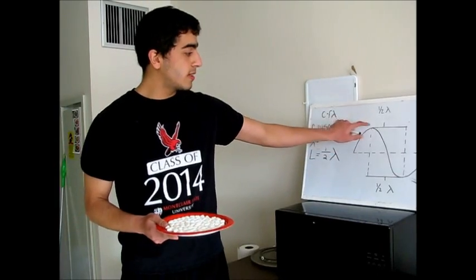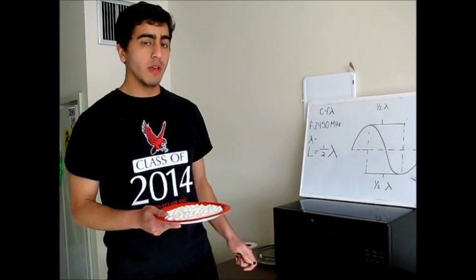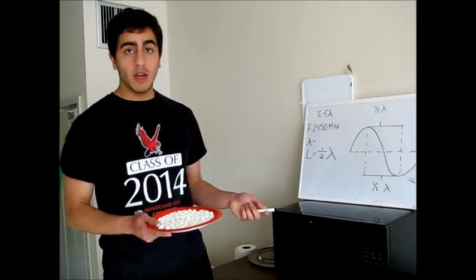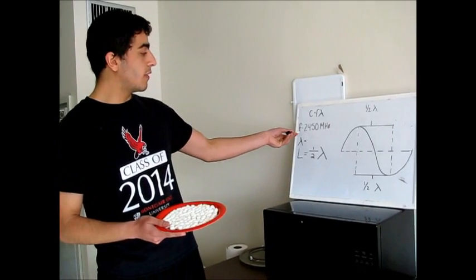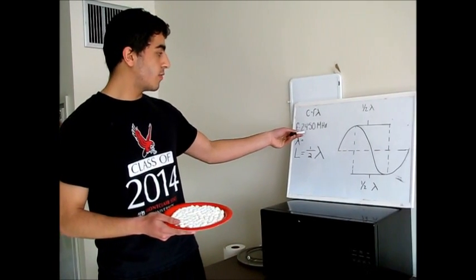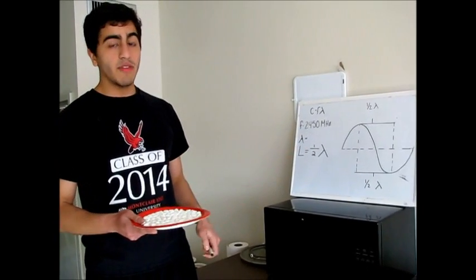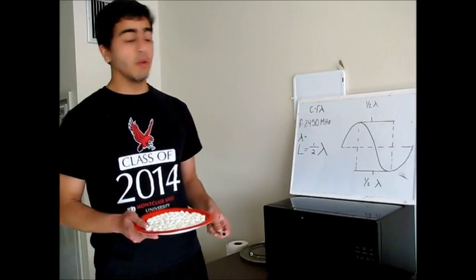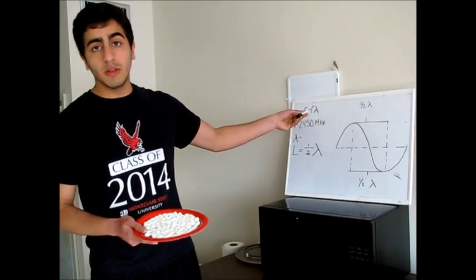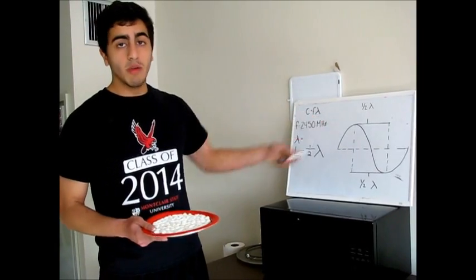It gets cooked at the crests and the troughs of that wave. We already figured out the frequency of our wavelength, which is 2450 megahertz, and we're going to find out what the wavelength is. Hopefully when we multiply using c equals frequency times wavelength, we can figure out the speed of light.